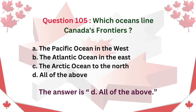Question 105: Which oceans line Canada's frontiers? A. The Pacific Ocean in the west. B. The Atlantic Ocean in the east. C. The Arctic Ocean to the north. D. All of the above. The answer is D: All of the above.